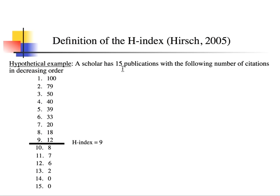Suppose we have a scholar with 15 publications listed in decreasing order of citations. His most cited paper has 100 citations, his second most 79, his third 50 citations, and so on. We keep going down until the point when the ordinal rank exceeds the number of citations. The ninth ranked publication has 12 citations, and the tenth ranked has 8 — eight is less than ten, so the H-index equals nine.